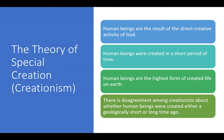There is disagreement among creationists about whether human beings were created either a geologically short time ago or a geologically long period of time ago. Some, like Gleason Archer and Walter Bradley, think that the earth was created a long time ago and that there are huge gaps in time not mentioned in the pages of Scripture. Others, like Henry Morris and Dwayne Gish, think that the earth is perhaps closer to 20,000 years old.